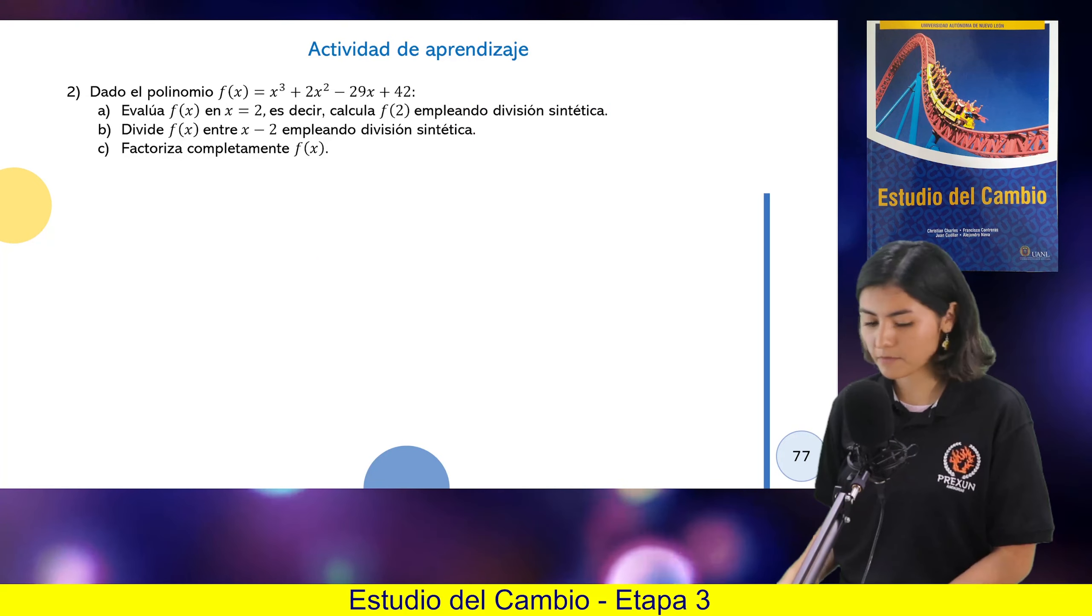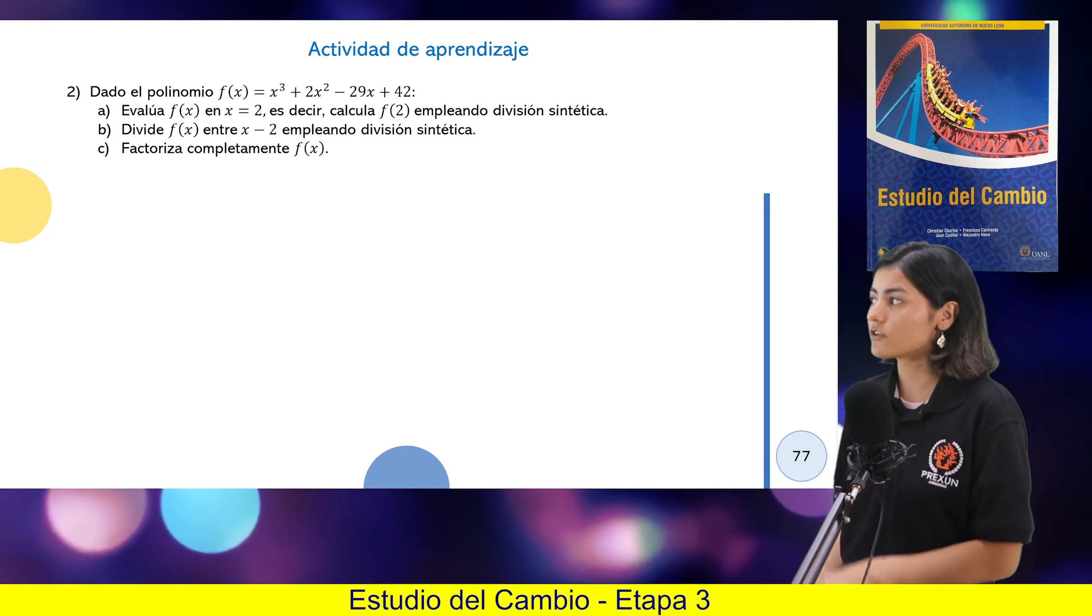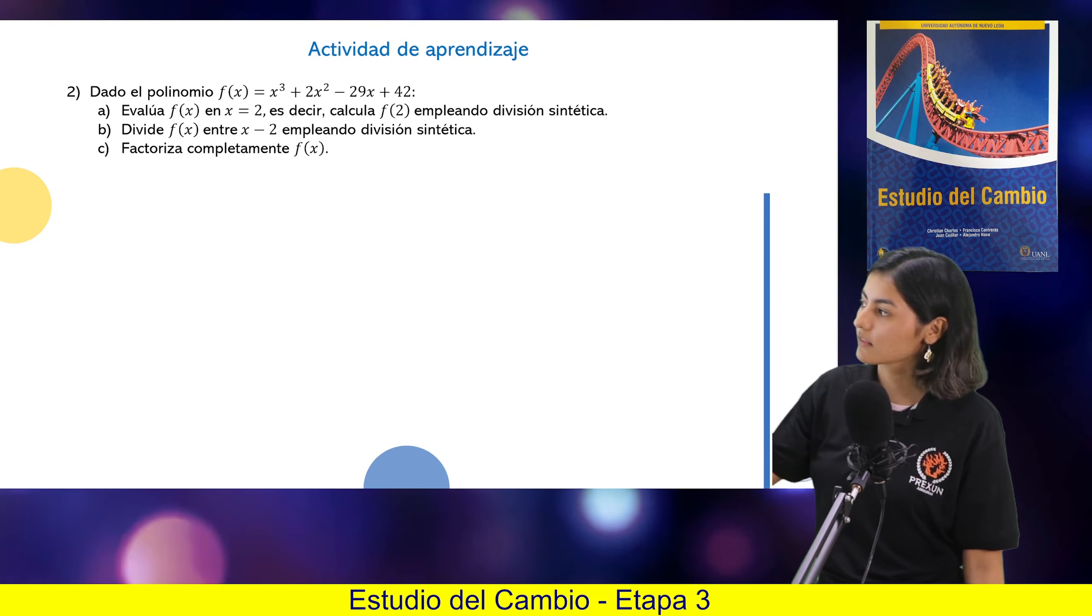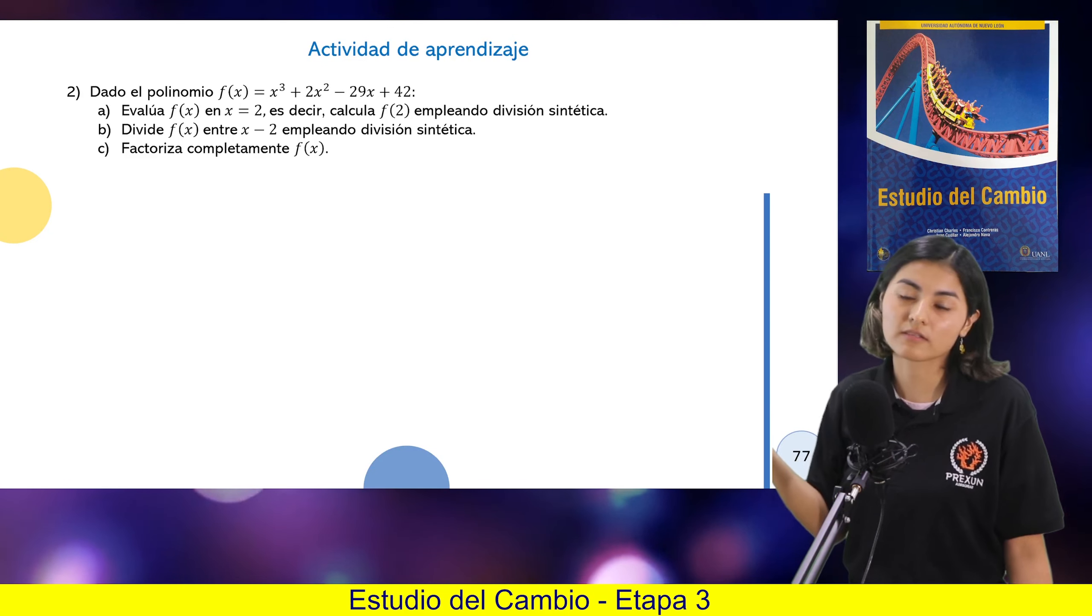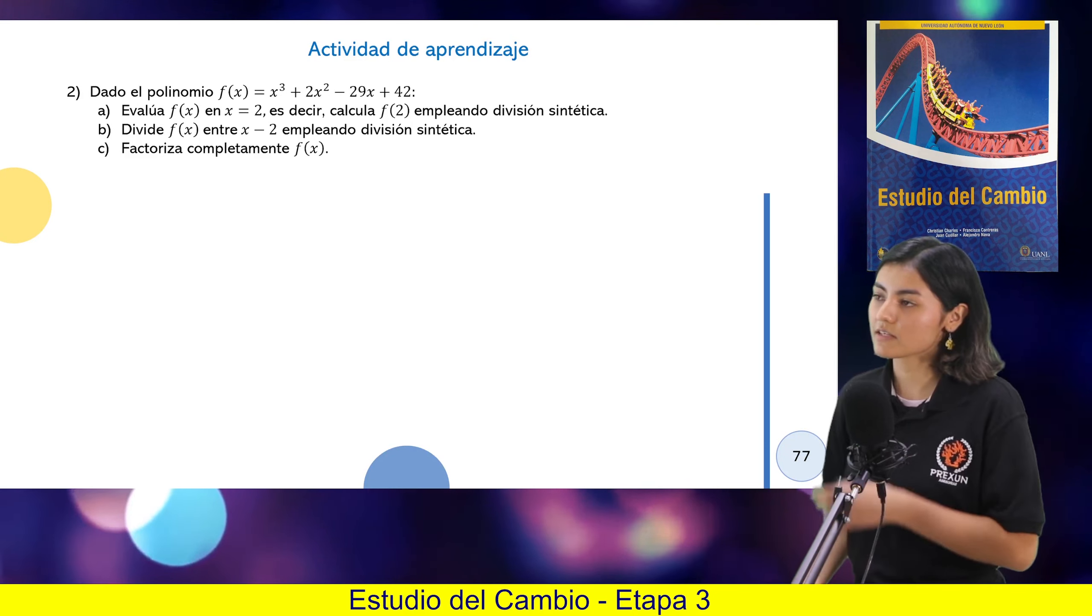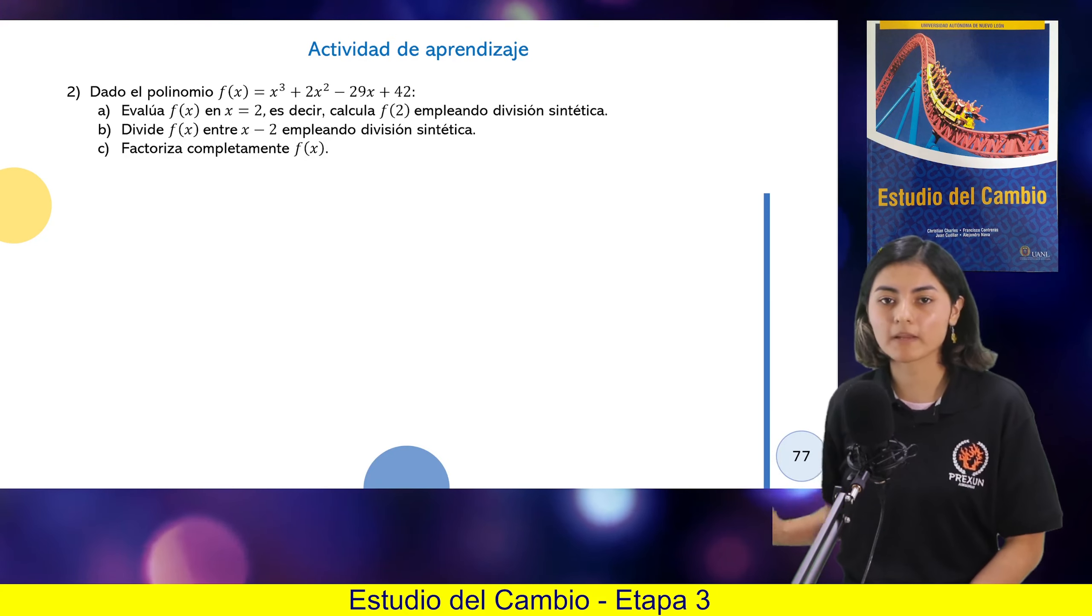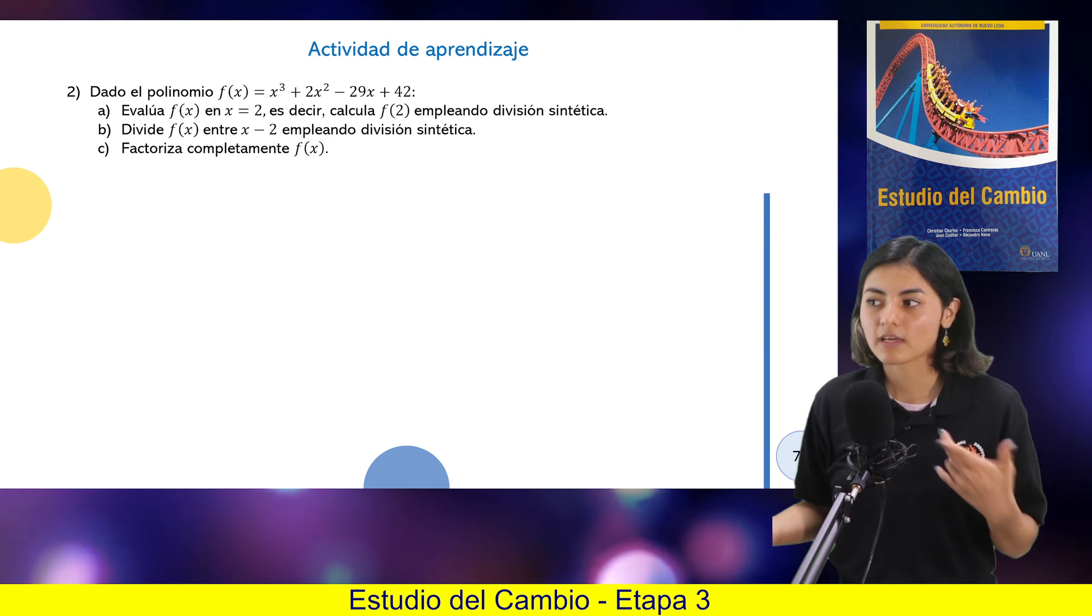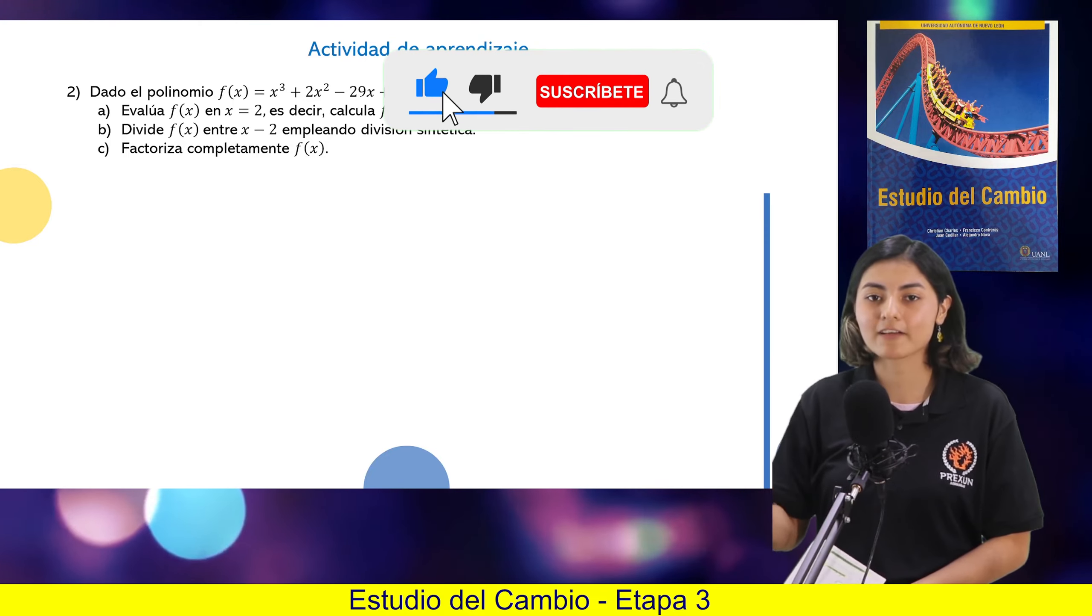Entonces, vamos a empezar con el siguiente problema. Dice, dado el polinomio x cúbica más 2x cuadrada menos 29x más 42, evaluar en 2, decir si está aquí entre x menos 2, si es básicamente un factor o no, que sí lo va a hacer, y lo va a factorizar completamente. Entonces, creo que vamos a dejar hasta aquí este video. En el siguiente ya vamos a verlo mejor todo completo para que quede en un solo video. Igual, en este pues intenté explicar un poquito más qué estaba pasando con las cosas. En el otro ya nos vamos a ir un poquito más directo. Y no olviden dejar su like.